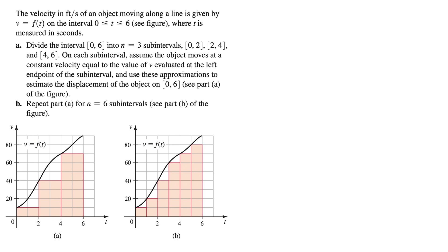Then it says on each subinterval, assume the object moves at a constant velocity equal to the value v evaluated at the left endpoint of this subinterval, and use these approximations to estimate the displacement of the object on 0 to 6. The key word here is left endpoint. Because when we make these rectangles, we need to know how high to make them. And if we use the left endpoint here, we make this little rectangle under this. But if we were to use the right endpoint from 0 to 2, we'd make a much bigger rectangle up here. So you have to very specifically specify whether using right endpoint or left endpoint or even midpoints or something else. In this case, we're using left endpoint. We're estimating the displacement. Displacement is given by the area under the curve.